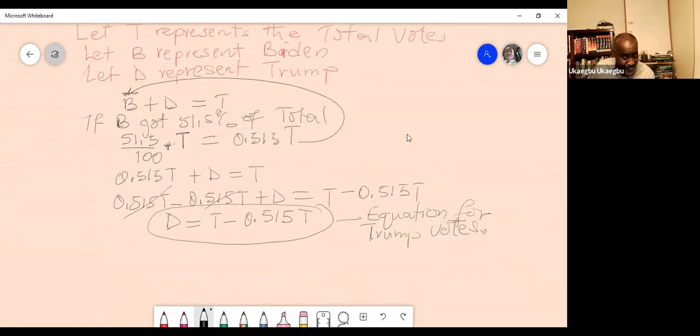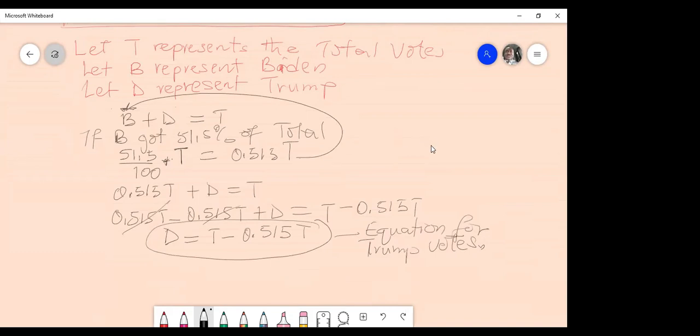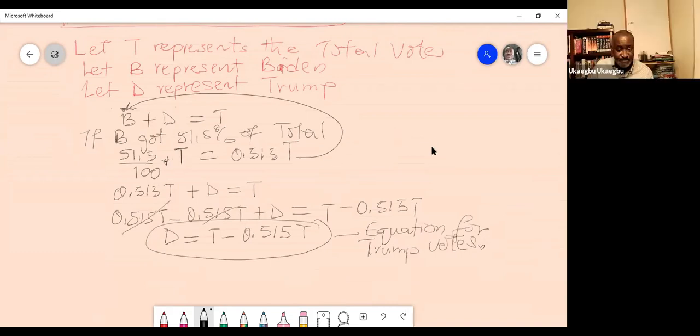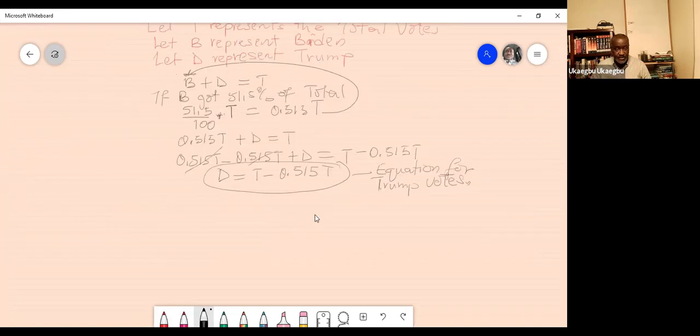Any questions so far? So now if we substitute the numbers, it's going to give us the value. You want us to substitute the numbers again? Just put 150 million on T, and then you come here and minus it with whatever you have here. That should give you the value for D.